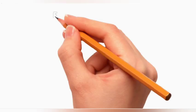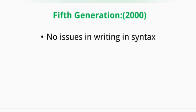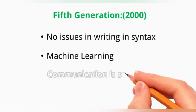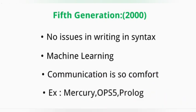Next, we see the fifth generation, developed in 2000. In third and fourth generation, syntax of writing code is very important; otherwise you will not get the output. In this generation, there are no issues in writing syntax. This generation is mainly designed for machine learning. Communication is very comfortable and easy. Examples: Mercury, OPS5, Prolog. These are the programming languages following fifth generation.